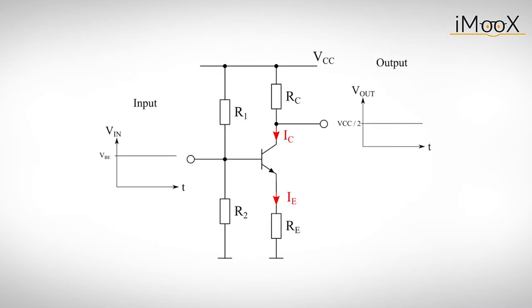Now let's assume that we have already biased the input so that the output voltage is half of the supply voltage. This should guarantee the largest possible output swing for a small AC signal at the input.